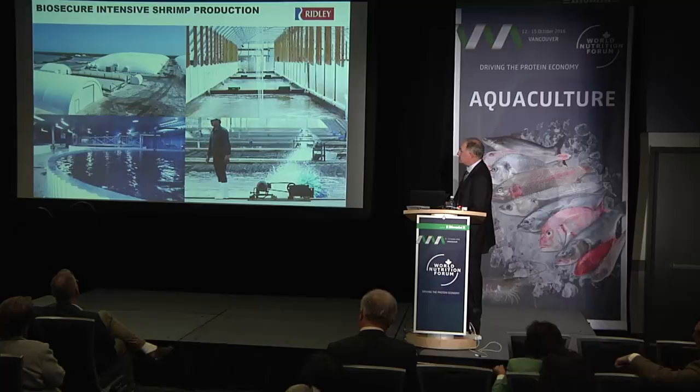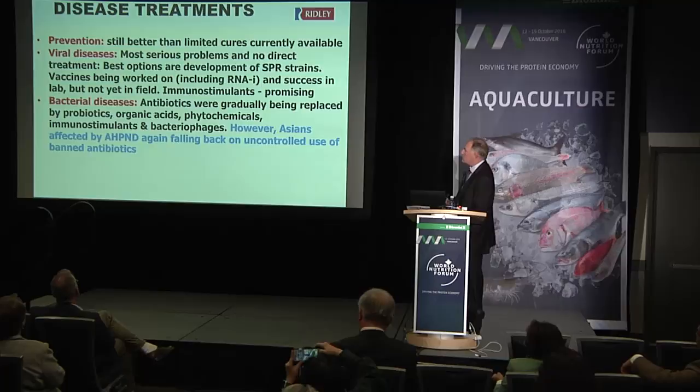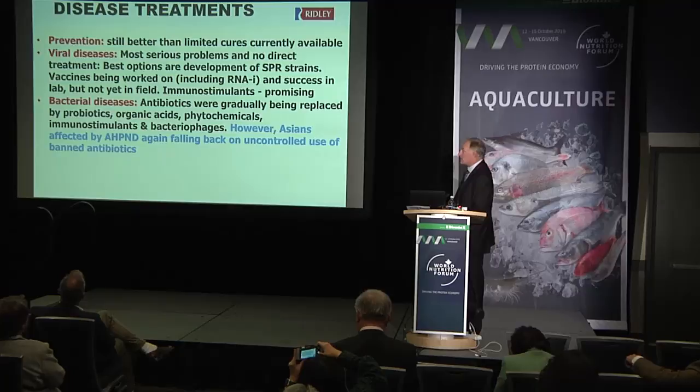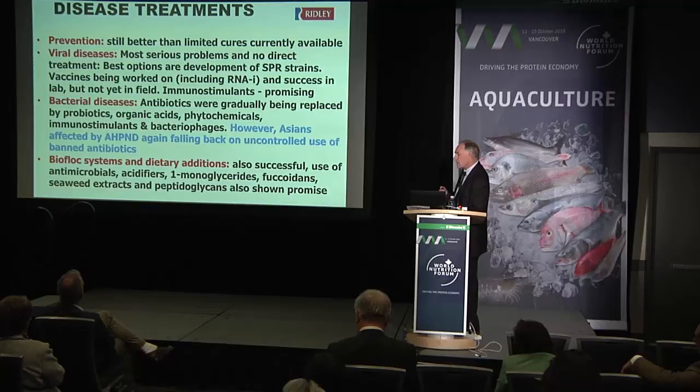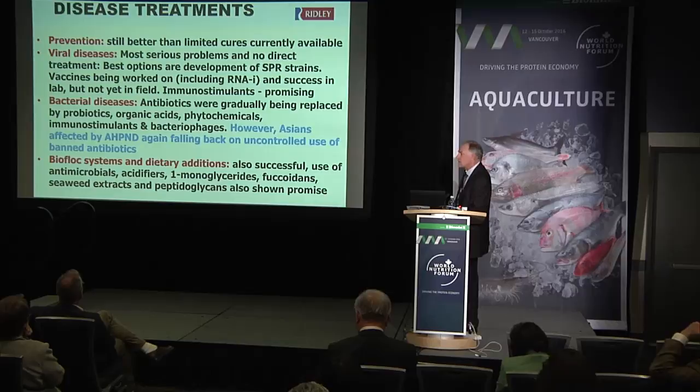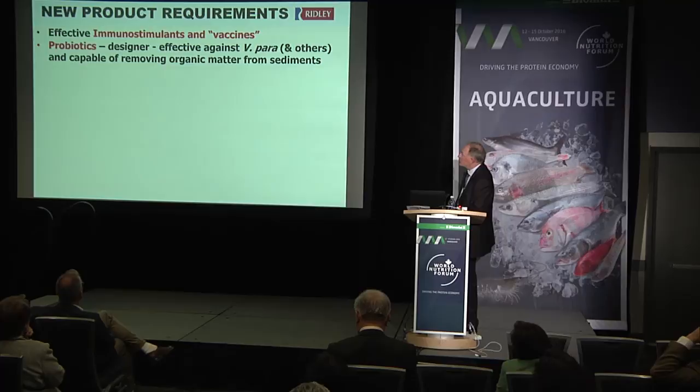In terms of treatments, there really aren't any. We have been gradually replacing antibiotics with probiotics, organic acids, phytochemicals, immunostimulants, and bacteriophages. But in desperation, a lot of Asian farmers are falling back into the use of illegal antibiotics — a really significant problem. Using bioflocs and dietary addition of biofloc meals is quite successful. Antimicrobials, acidifiers, monoglycerides, fucoidan, and seaweed extracts can all be effective if your management is working properly.